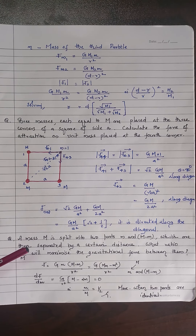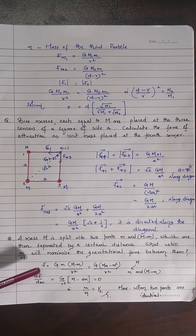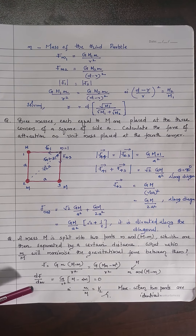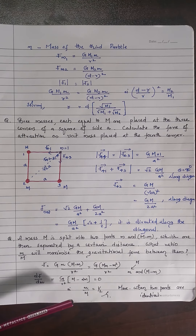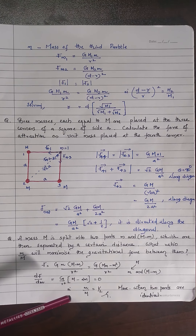A mass M splits into two parts m and (M−m), which are then separated by a certain distance. What ratio m/M will maximize the gravitational force between them? The force is F = G·m·(M−m)/R². To maximize, we set dF/dm = 0 and solve to get m/M = 1/2. That means the two parts are identical — a very important concept.